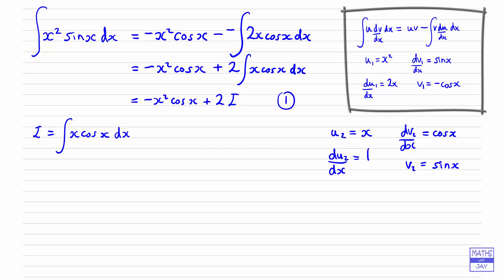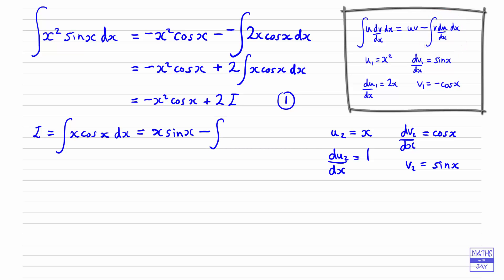Applying the formula again, we get that the integral of x cos x dx is: multiply u2 and v2 together, so that's x sin x, and then subtract the integral of v2 times du2/dx, so that's 1 times sin x — simply the integral of sin x dx. Now we are left with an integral we can work out, so the first term stays as x sin x, and then we're subtracting the integral of sin x, which is negative cos x — so minus and a minus gives us plus cos x.